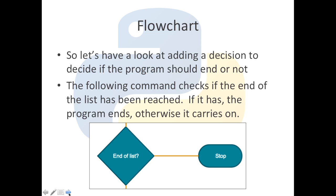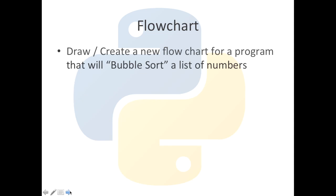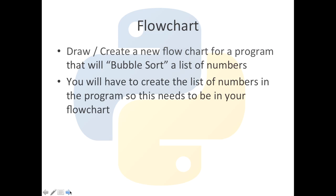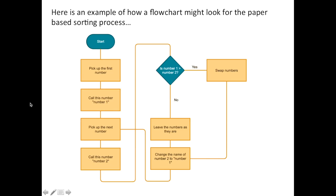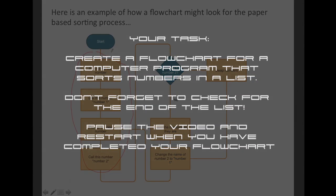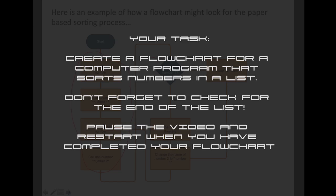Now it's your turn to draw — or create using online software — a new flowchart for a program that will bubble sort a list of numbers. You'll need to create a list of numbers in the program, so that must be in your flowchart. Make sure you include the new decision to check when the program reaches the end of the list. Start with the terminator and then immediately create a process that generates a list of five numbers. Give yourself about ten minutes before moving on.